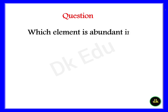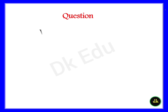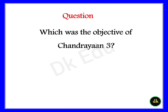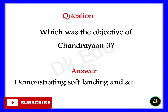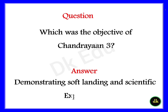Question: Which element is most abundant on the moon? Answer: Silicon. Question: What was the objective of Chandrayaan 3? Answer: Demonstrating soft landing and scientific exploration. Thanks for watching.